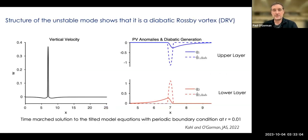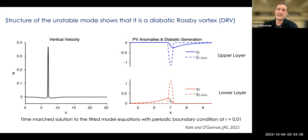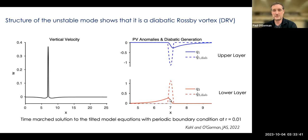What do the potential vorticity anomalies and structure look like? On the left is the vertical velocity, and we focus on the region where the vortex occurs — from x equals 5 to 9. You see positive PV in the lower layer, negative PV in the upper layer, and the diabatic generation is phase-shifted just as in the GCM. Because it's a two-layer quasi-geostrophic model there's a symmetry between upper and lower layers, but apart from that, this seems like a pretty good model for the diabatic Rossby vortex.